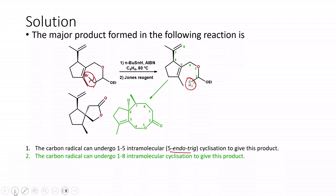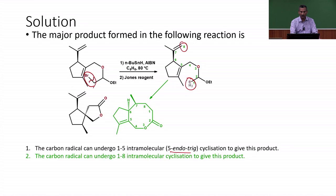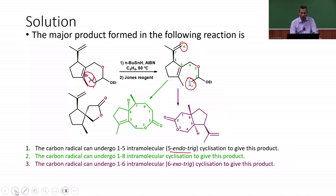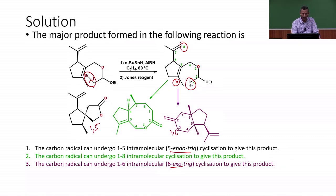Another possibility is 8-membered ring formation: counting C1 through C8, the methylene radical attacks the terminal methylene double bond, which would give an 8-membered ring. A third possibility is 1,6-cyclization where there is a sixth carbon on the double bond — the 5,6-alkene — giving a 6,5-ring system. So we have 1,5 and 1,6 cyclizations as the two most preferred options according to Baldwin's rule.